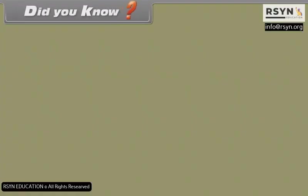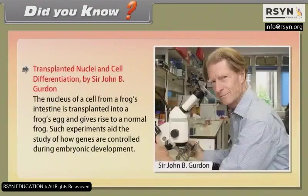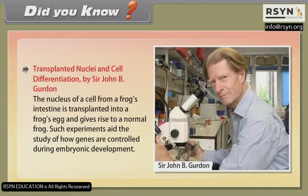Did You Know: Transplanted Nuclei and Cell Differentiation — by Sir John B. Gurdon. The nucleus of a cell from a frog's intestine is transplanted into a frog's egg and gives rise to a normal frog. Such experiments aid the study of how genes are controlled during embryonic development.